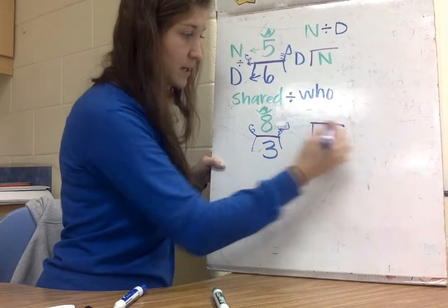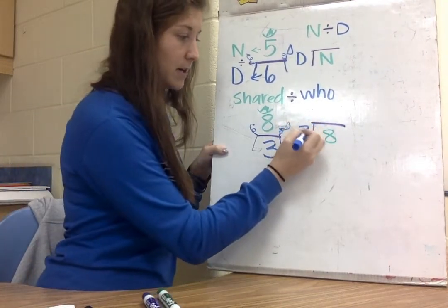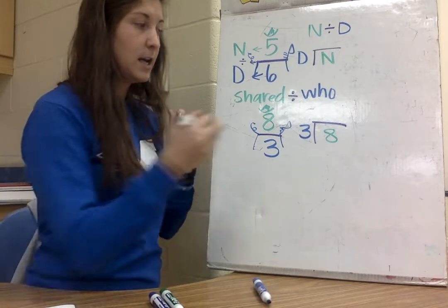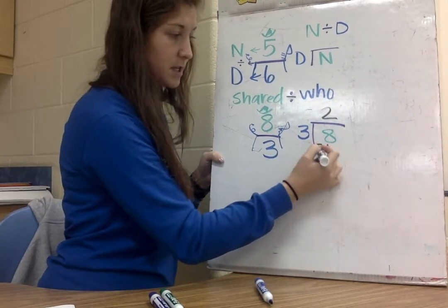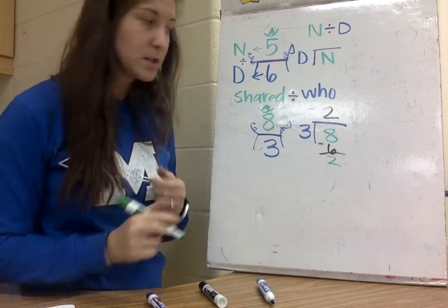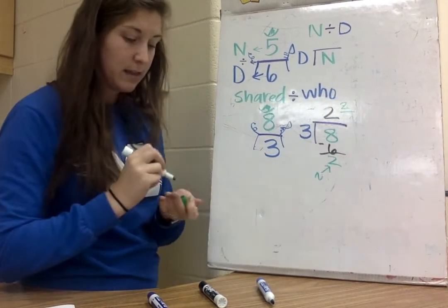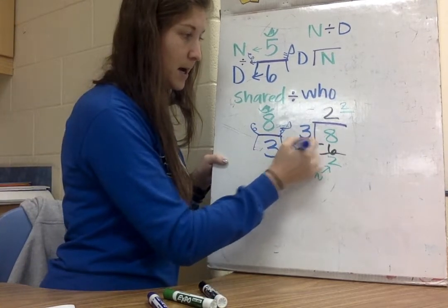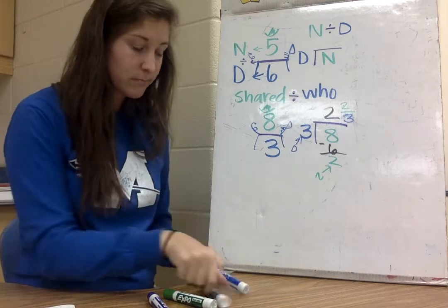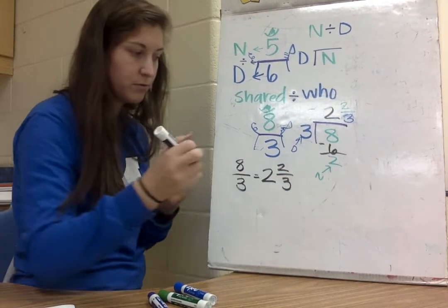So if I look at 8/3, I'll build my division house. My numerator 8 is the cowboy, so 8 goes on the inside. My denominator 3 goes on the outside. 3 can go into 8 only 2 times because 2 times 3 is 6. 8 minus 6 is 2. So my whole number is 2, and my new numerator is 2, with 3 staying as my denominator. Therefore the improper fraction 8/3 is equal to 2 and 2 thirds.